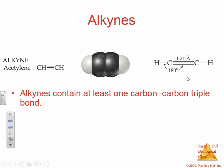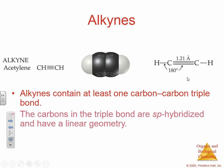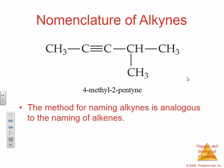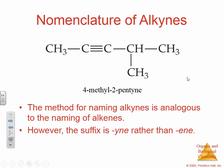Alkynes contain at least one triple bond. They have SP hybridization and linear geometry due to that triple bond. Just like alkenes, they're also unsaturated. We name them the same way we named alkenes — find the longest chain, one through five, and start naming closest to the triple bond. Here we have 2-pentyne, and the methyl group is off of the fourth carbon, so it is 4-methyl-2-pentyne.